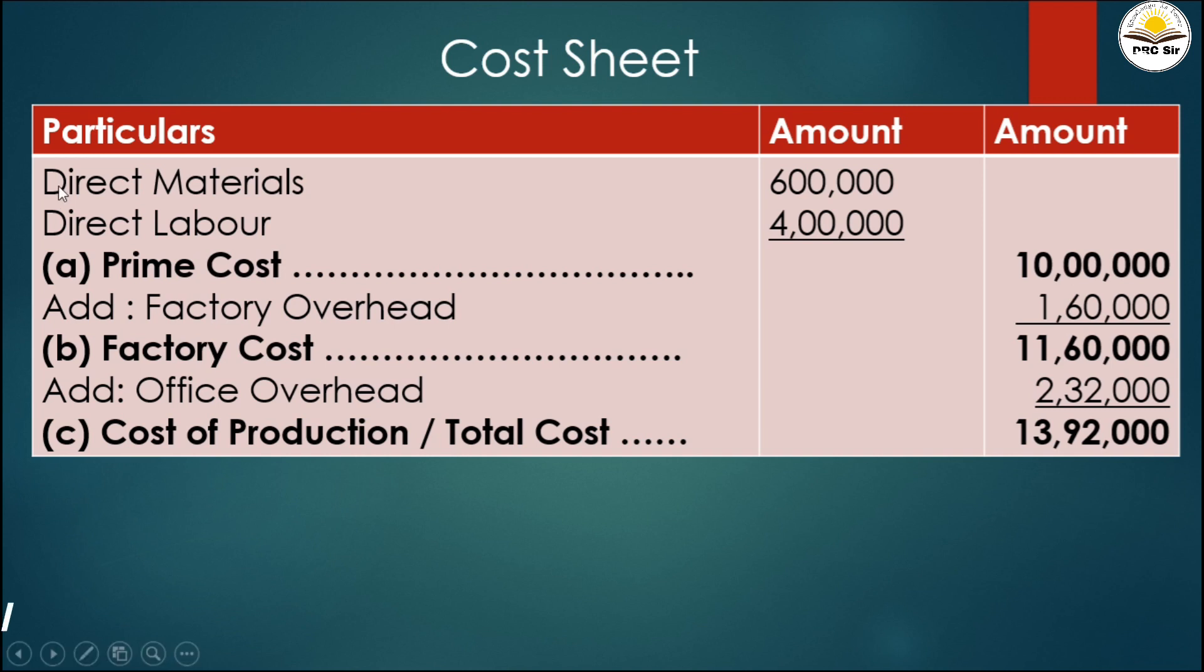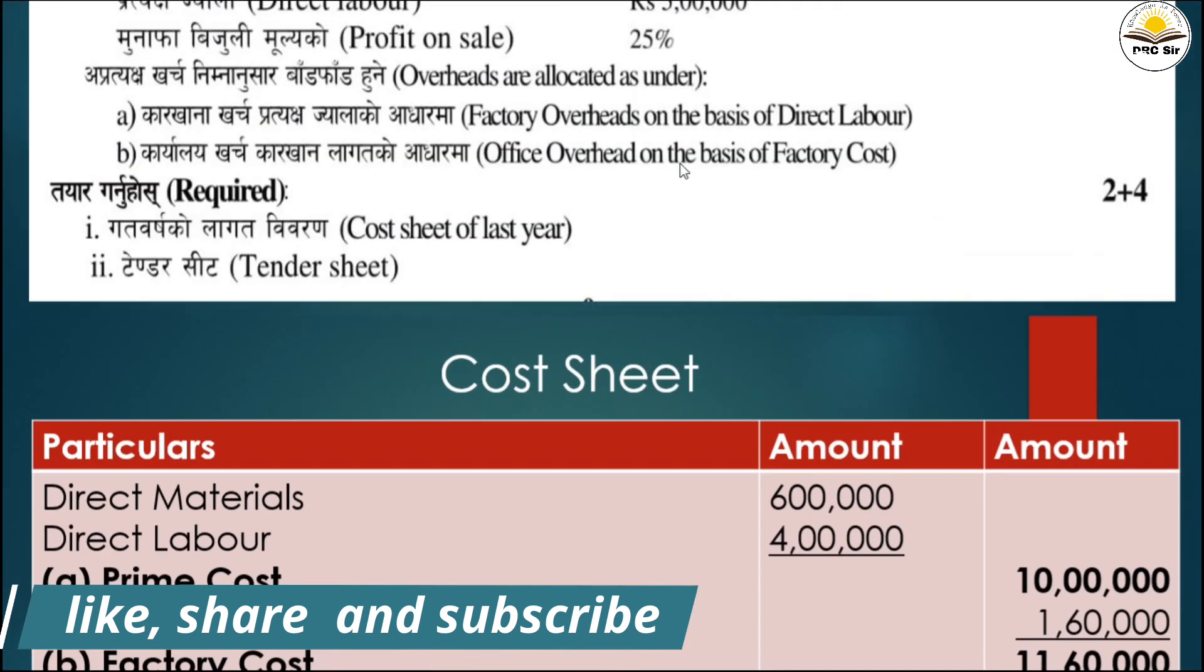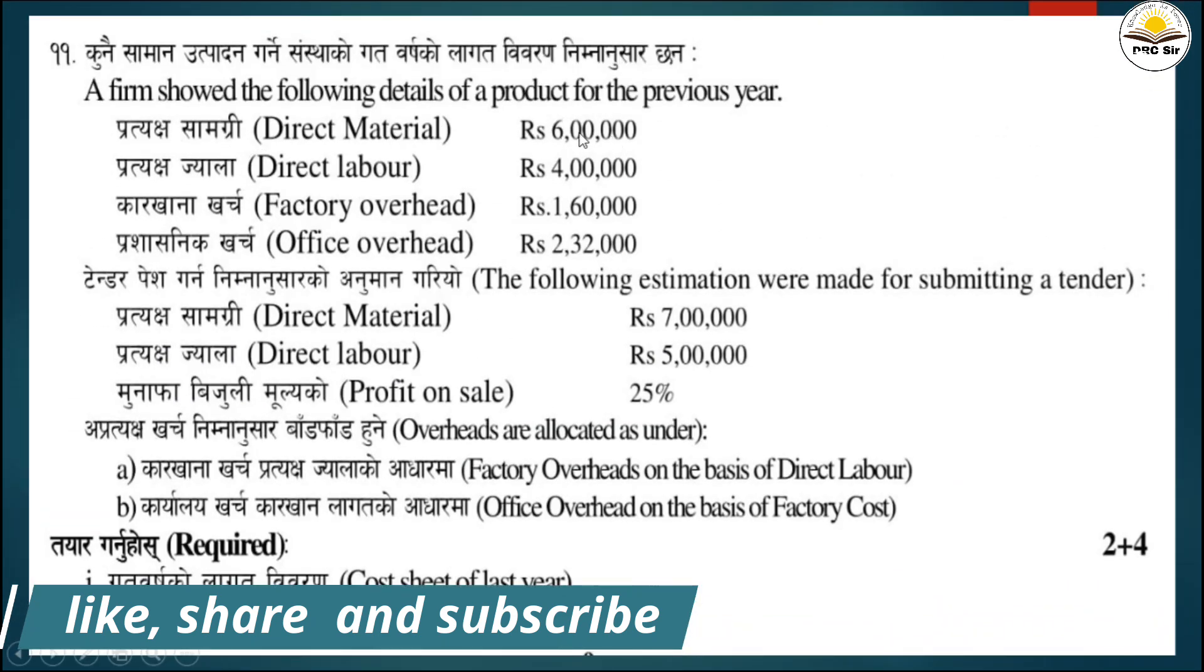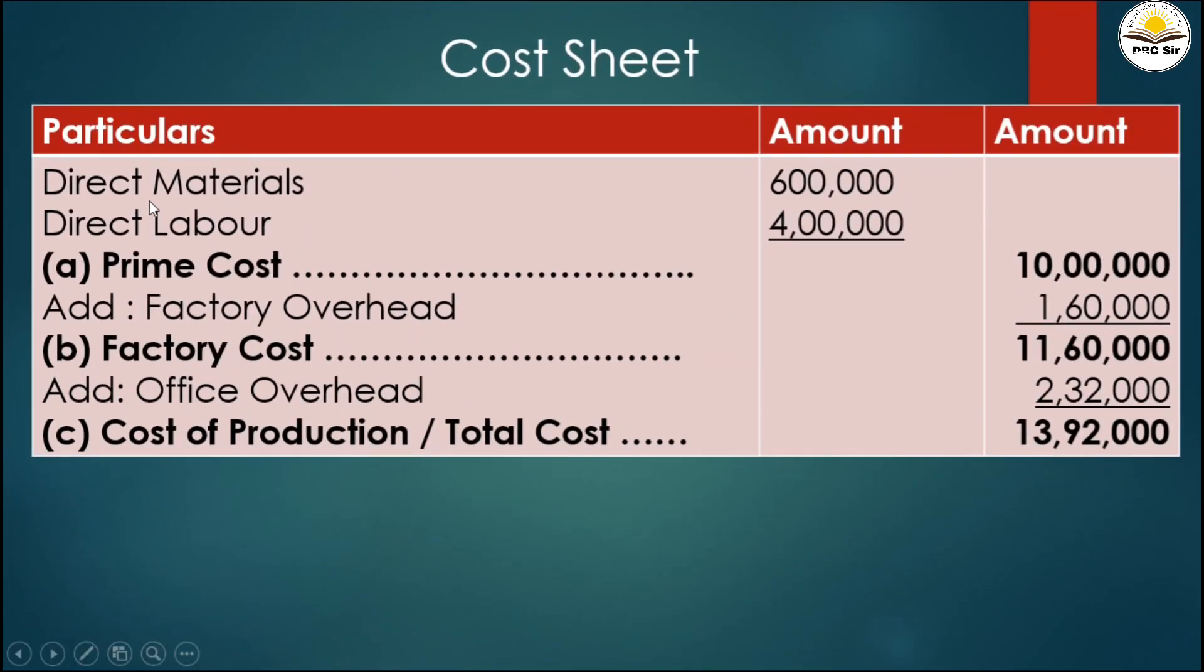From the question, direct material is 6 lakhs and direct labor is 4 lakhs, which equals 10 lakhs. This is our prime cost.